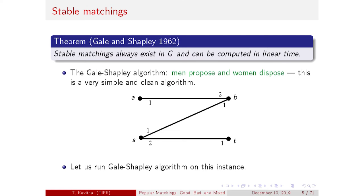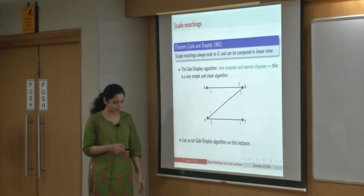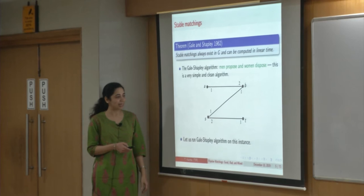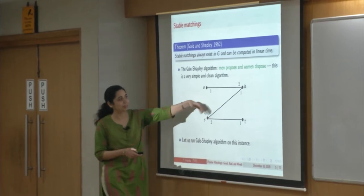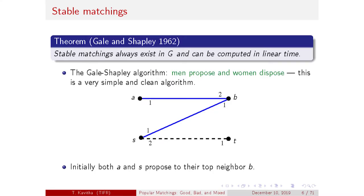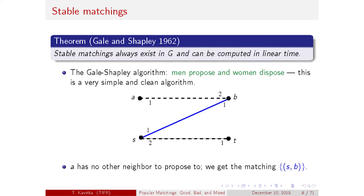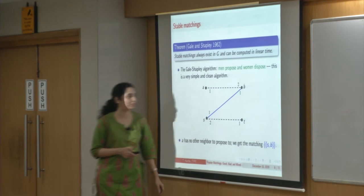Going back to our example instance, both men prefer their top choice neighbor B. B herself prefers S to A. So B accepts S's proposal and rejects A. A has no one else to propose to and that's the end of the algorithm — we get the singleton edge SB.